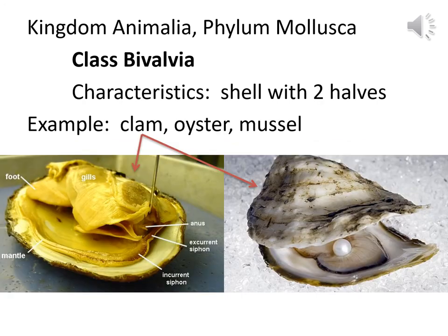A clam, oyster, or mussel would all be in Class Bivalvia. 'Bi' is two, and 'valvia' refers to the shell with two halves. The shell of a clam comes in two pieces, same thing with the oyster and the mussel. Bivalvia.